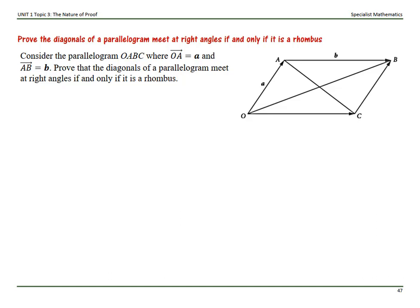Let's state everything. If OA is equal to a, then CB is also equal to a. If AB is equal to b, then OC is equal to b. So let OA equal CB which equals vector a, and OC equals AB which equals vector b. Now let's look at our diagonals.